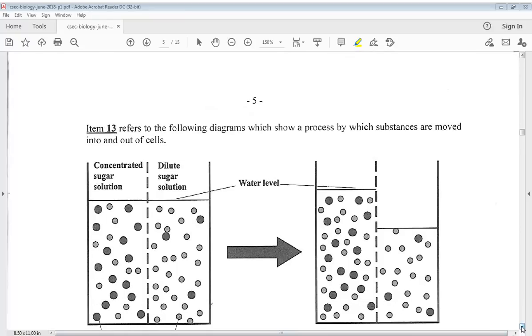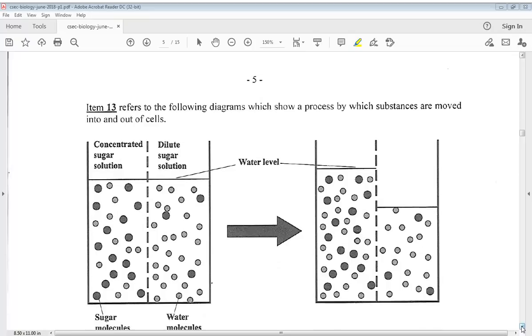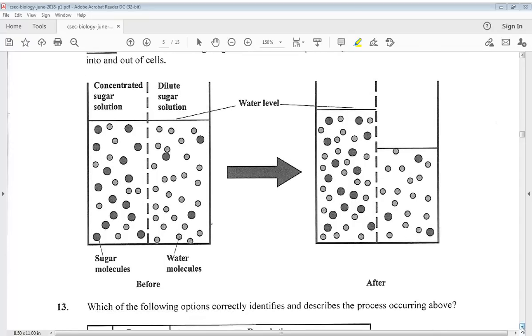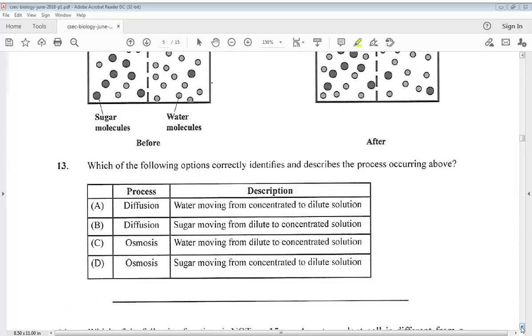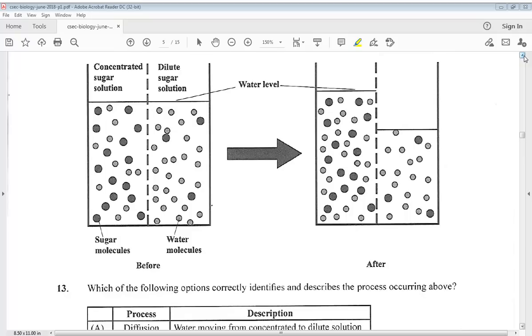Let's go to number 13. Item 13 refers to the following diagrams which show a process by which substances are moved into and out of cells. We have the before and we have the after picture. Which of the following options identifies and describes the process occurring above? We know the answer for 13 is C, osmosis, water moving from diluted to concentrated solution.